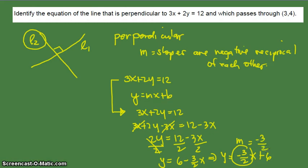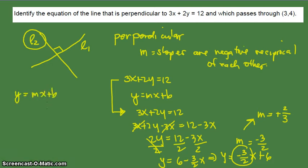The line we need is perpendicular to this line, so its slope will be the negative reciprocal of negative 3 over 2. Negative reciprocal means the opposite sign — this is negative, so we have positive — and reciprocal is the reverse of the fraction, so we have 2 over 3. The slope of the line perpendicular to 3x plus 2y equals 12 is m equals 2 over 3. So the equation we need takes the form y equals 2/3 x plus b.